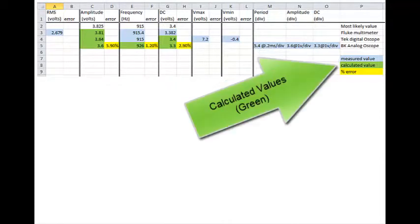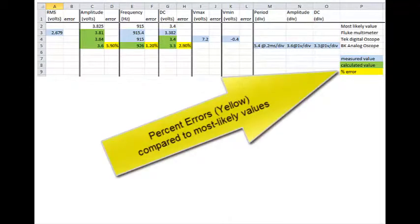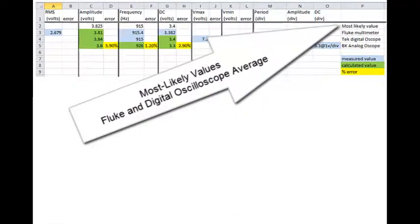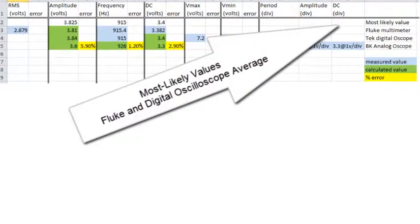In blue are the measured values. In green are the calculated values from those measured values, and in yellow are the percent errors compared to the most likely values. The most likely values are the average of the Fluke and the digital oscilloscope.